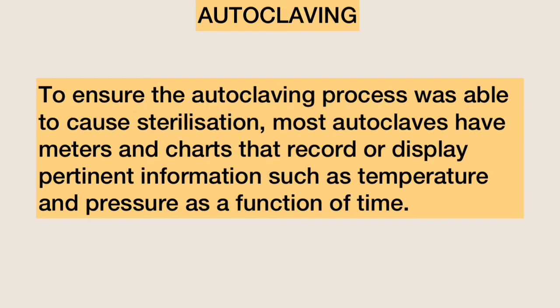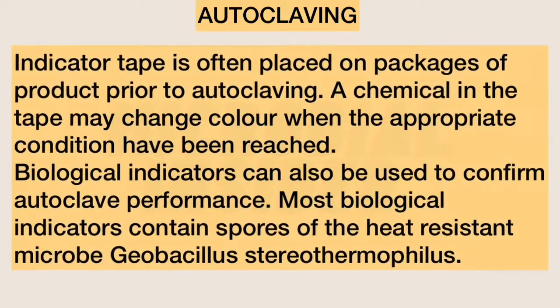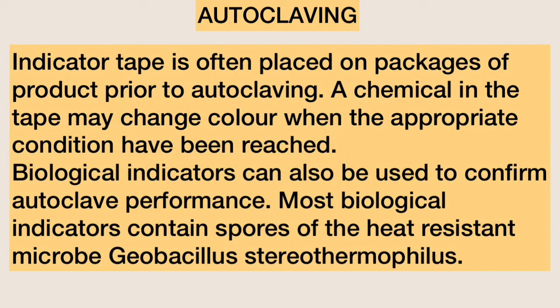To ensure the autoclaving process was able to cause sterilization, most autoclaves have meters and charts that record or display important information such as temperature and pressure as a function of time. Indicator tape is often placed on packages of products prior to autoclaving, and a chemical in the tape may change color when the appropriate conditions have been reached. Biological indicators can also be used to confirm autoclave performance.